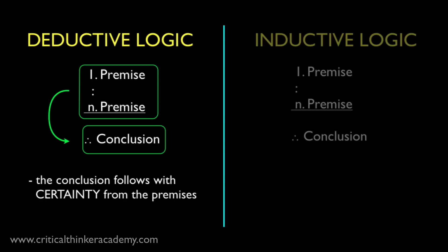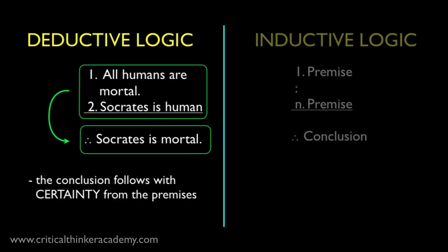A deductive argument is one that is intended to be valid. Here's a simple, well-worn example. All humans are mortal. Socrates is human. Therefore, Socrates is mortal. If we grant both of these premises, it follows with absolute deductive certainty that Socrates must be mortal.